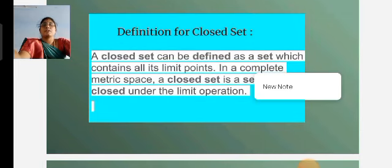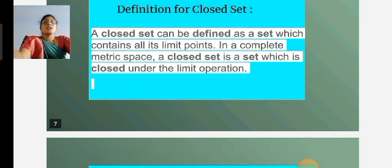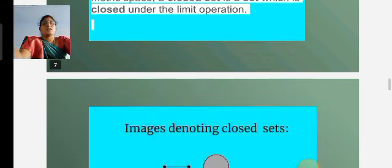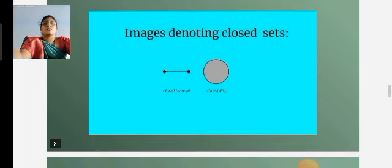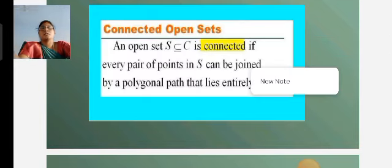Next we have the closed set. A closed set contains all its limit points. In a complete metric space, a closed set is a set which is closed under the limit operations. Examples denoting closed sets include the closed interval and the closed disk.